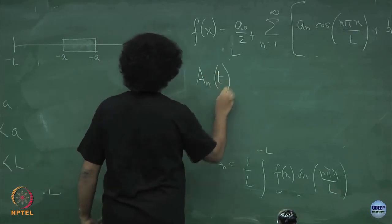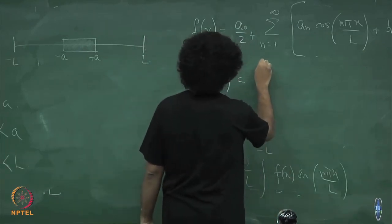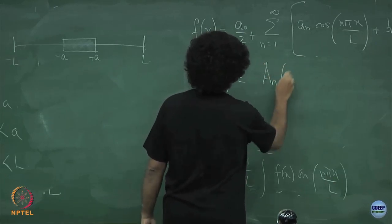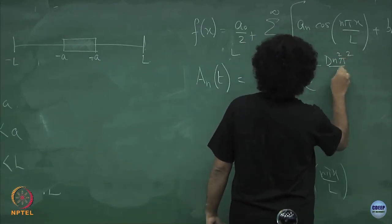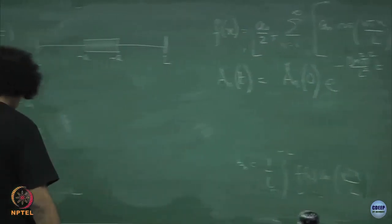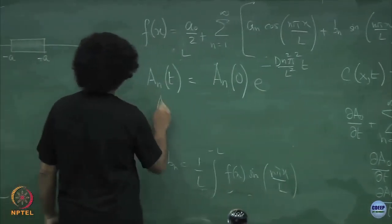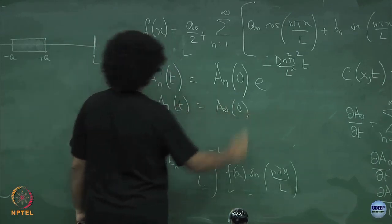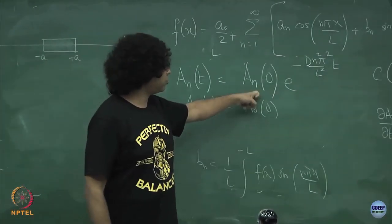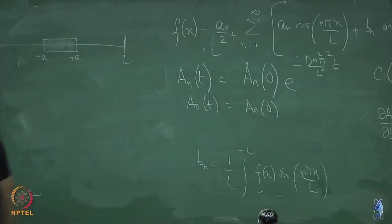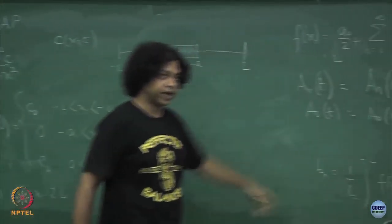The solution is exponential: a_n(t) equals a_n(0) times e to the power of minus D n² pi² / l² times t. And a naught does not change with time at all, so a naught of t is simply a naught of 0. So I know how these coefficients evolve with time; all I need to know is what these coefficients were at the initial time itself.